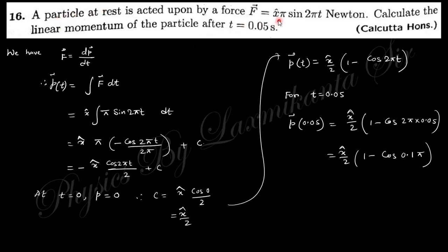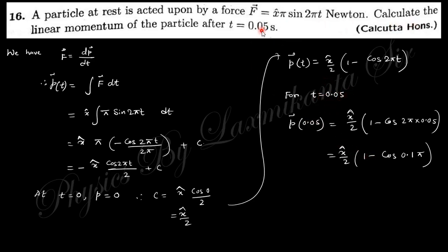Next question: a particle at rest is acted upon by a given force. Calculate the linear momentum at t = 0.05 s. Since F = dp/dt, we have p = ∫F dt. Integrating F and applying the initial condition that momentum = 0 at t = 0 gives constant c. Substituting t = 0.05 s gives the answer. Note: if the time were 0.5 s, you would get cos π = −1, but according to the question I use t = 0.05 s.